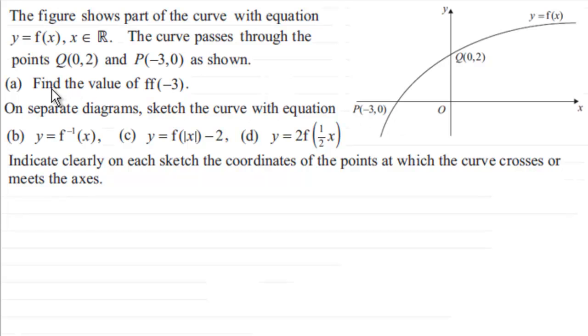And then what we've got to do in the first part is find the value of the combined function ff of minus 3, and then we're asked to sketch diagrams of the curve with equation y equals the inverse function of x, and in part c y equals f of mod x minus 2, and in part d y equals 2f of a half x. We've got to indicate clearly on each sketch the coordinates of the points at which the curve crosses or meets the axes.